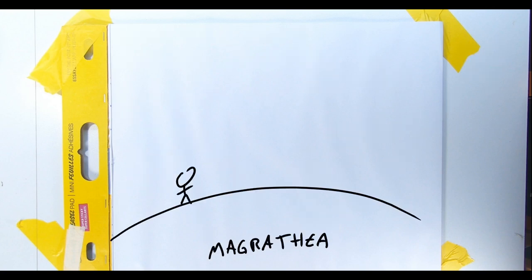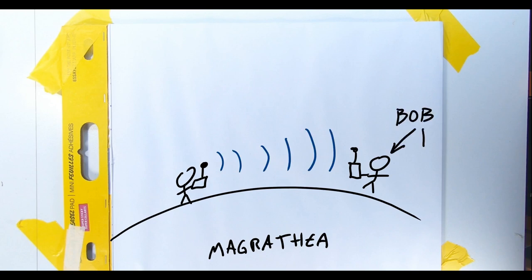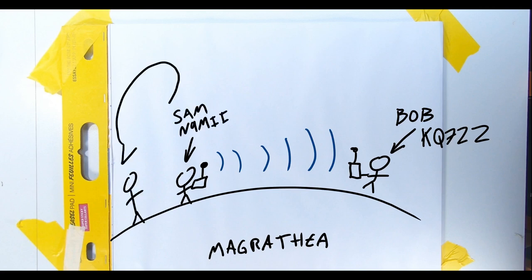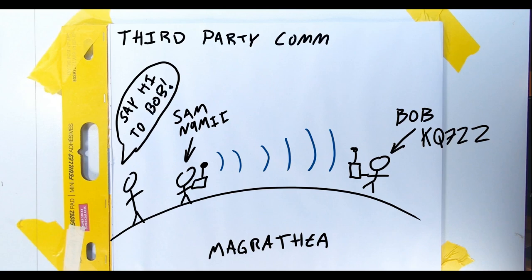Okay, let's say I'm having a conversation with Bob here. Kilo Quebec 7 Zulu Zulu. Not really a call at the moment. I somehow continue to be Sam, November 9, Michael India India. Some HT walks up to me and asks me to say hi to Bob. That's called third-party communication. It's totally fine, but of course, there are some rules for it.